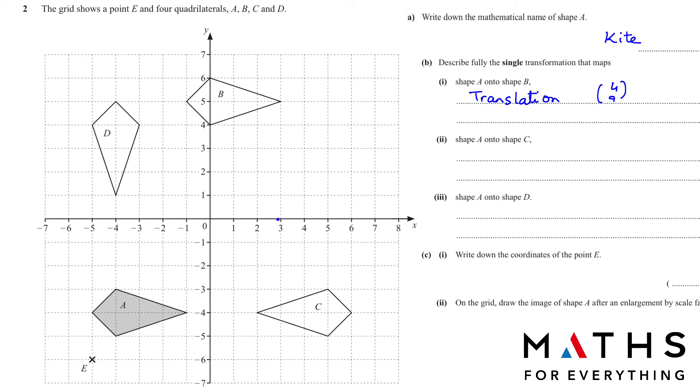Okay, the next one, shape A onto shape C. Now, this is clearly a reflection. So we write reflection, we get one mark for writing that. And one mark for writing the mirror line. It is reflected from this line. If you see, there is one and a half units here, one and a half units here. So this point is X is equal to 0.5.